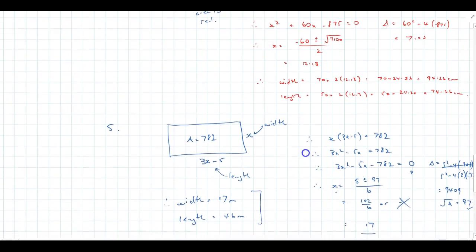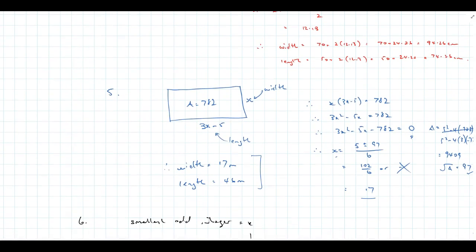Down to question 5, which says the length of a rectangle is 5 less than 3 times its width. So I let the width be x, and therefore the length is 5 less than 3 times it, so 3x minus 5. I then work out the area to be x by 3x minus 5 to be equal to 782. As you can see over here, that's my working.